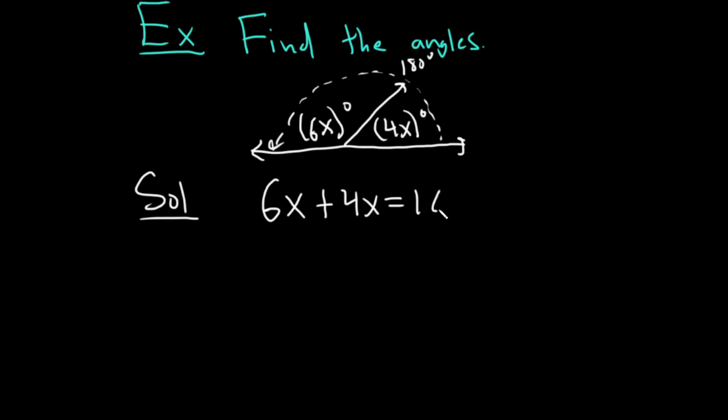So if we add these, 6x plus 4x, that's equal to 180 degrees. And it is equal to 10x, and that's 180. And you can divide by 10, so we get x equals 18.